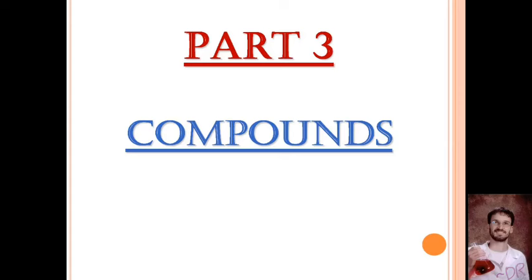So far in this unit, we've talked about matter — the atoms and molecules that make it up and how they're constantly moving. That was part one. Part two, we really looked at atoms and the periodic table: why it's laid out the way it is and how the individual parts of an atom make it what element it is. You add one proton to an atom and suddenly you have a whole different material. What we haven't talked about, though, is what happens when these atoms come together. That's what part three is all about — we're going to start learning today about compounds.